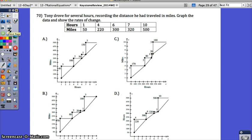Okay, number 70 looks a little overwhelming. Tony drove for several hours, recording the distance he traveled in miles. Graph the data and show the rates of change. So these points here are graphed. And they're going to be these bottom ones. They're the line. Then all these triangles, these are counting the rise and the run, or the rate of change. So just remember that. So the first thing I would do is start with the first point and make sure that this point, one hour to 50 miles, is graphed in all the graphs.